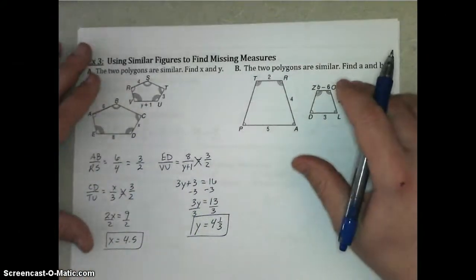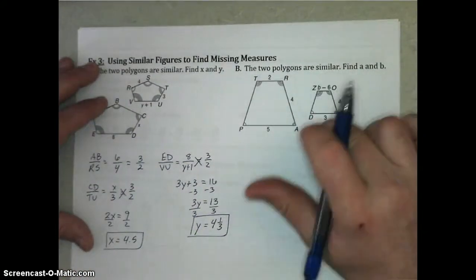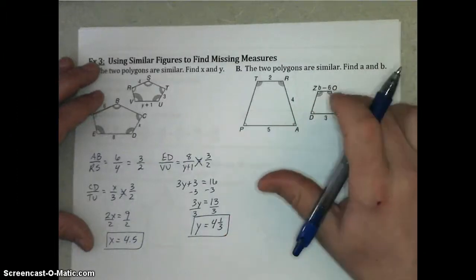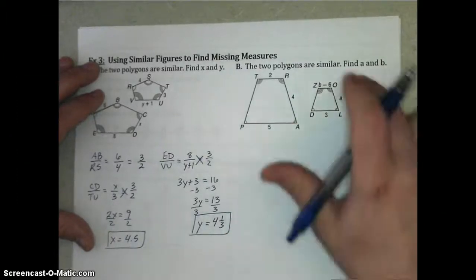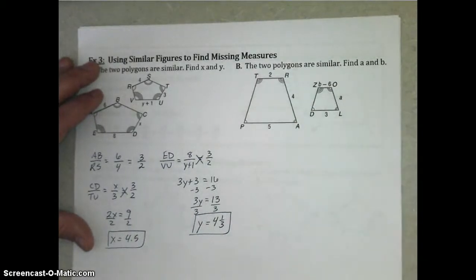So, we're going to use the same kind of strategies to find the missing values A and B in example B. So, why don't you take some time, pause the video, and work through solving those to find the values of A and B. Remember to set up your proportions and stick with the same proportion for both parts.